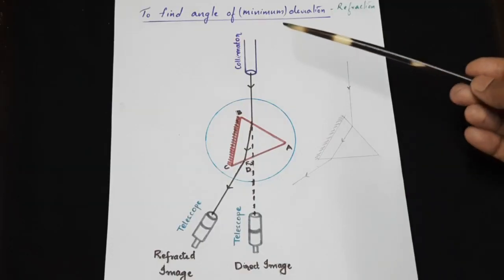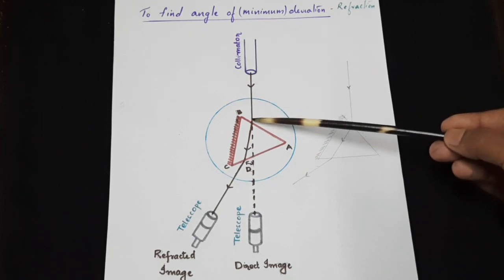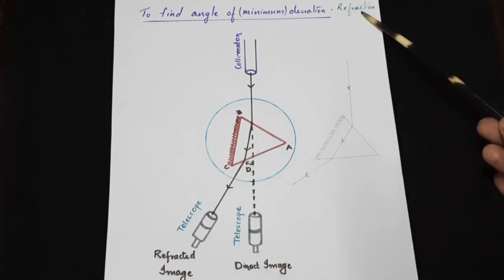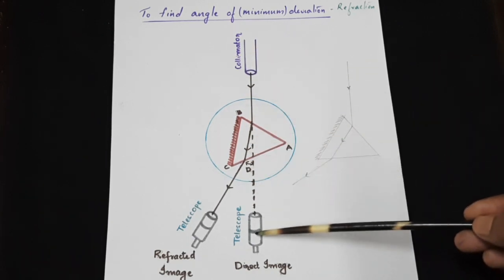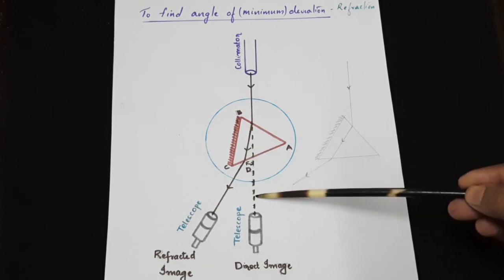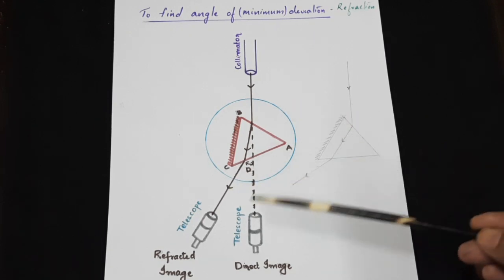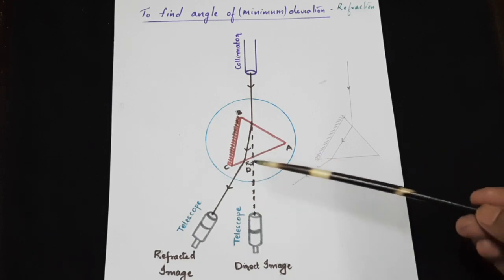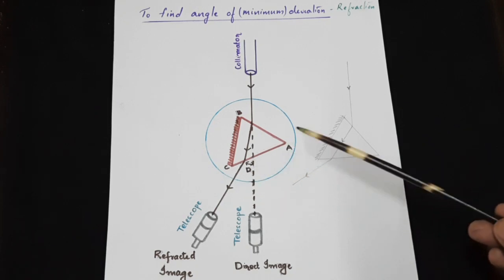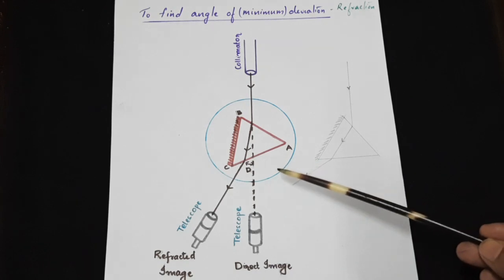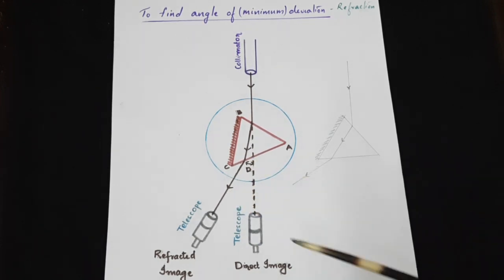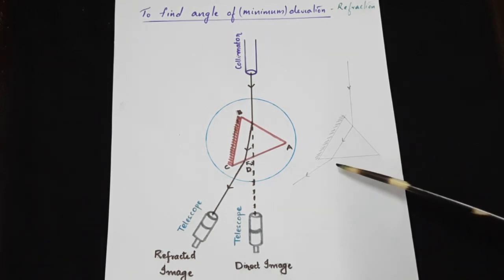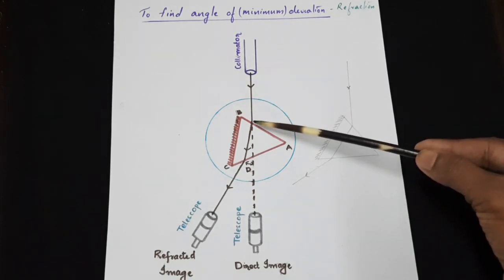Our next step is to find out the angle of minimum deviation of the prism. The incident ray enters the prism and gets refracted — this is refraction of light; it bends when entering from one medium to another. If this is a direct ray, this ray is now getting deviated through an angle d. We can make this angle of deviation minimum by rotating the prism to a suitable position so that this angle becomes the angle of minimum deviation. The experimental setup requires the angle of incidence to be acute for this purpose.